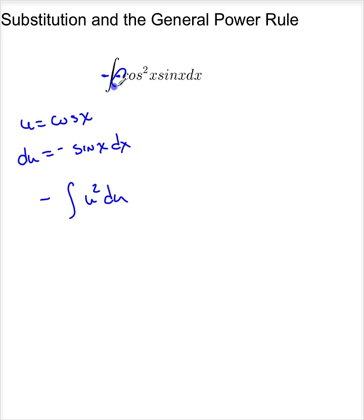Because du, I need that negative. I need the sine, and I need dx. So this is minus u cubed over 3 plus a constant. So it's minus u is cosine x cubed divided by 3 plus c.